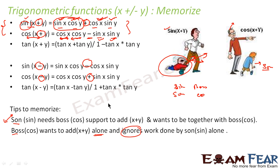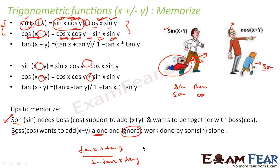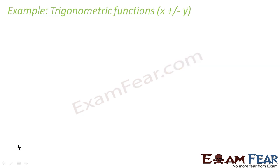tan(x+y) is a pretty simple formula to remember. tan(x+y) equals tan x plus tan y divided by 1 minus tan x tan y. It's different in form from sin and cos, so you can remember it on its own. Let's take some examples.